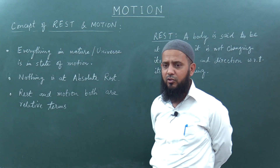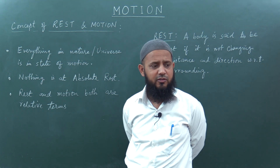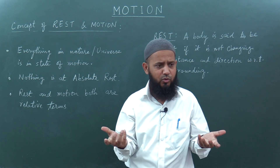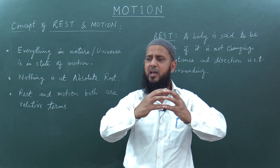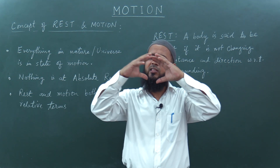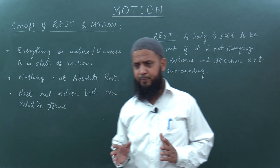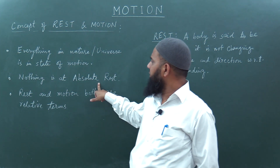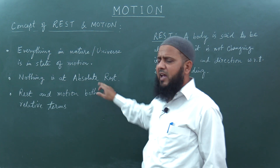If you will observe this universe, you will find everything in the universe is in the state of motion. For example, on the surface of the earth, the earth is moving, so everything on it is moving. The sun is in our Milky Way galaxy and it is also moving. Our Milky Way galaxy, which contains millions of stars, those stars are all moving together. Everything is moving in this universe, so we can say nothing is at absolute rest.